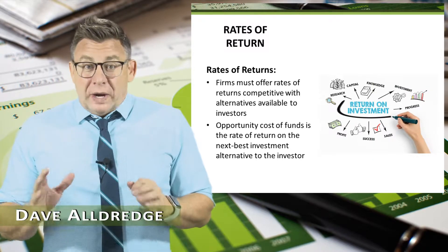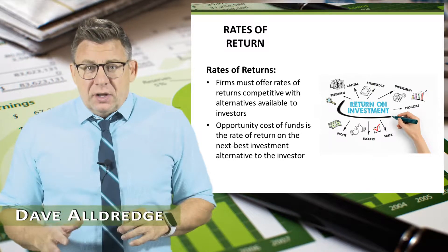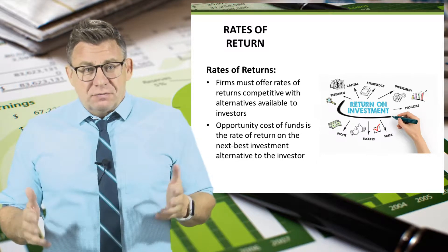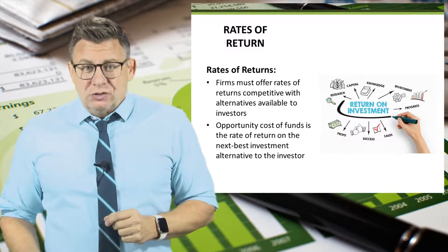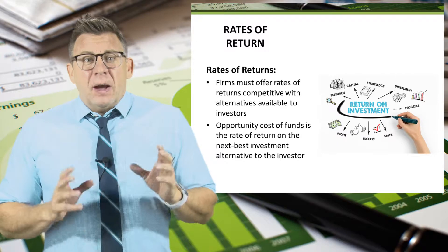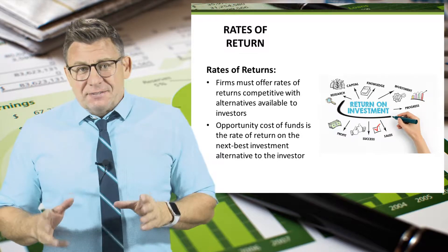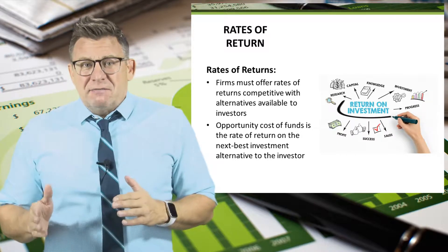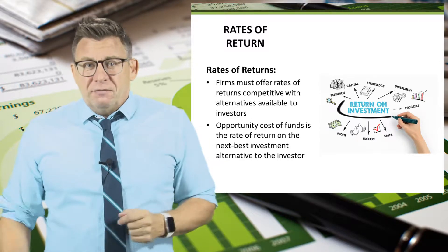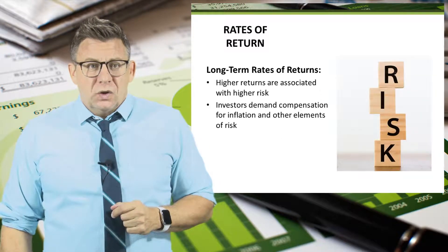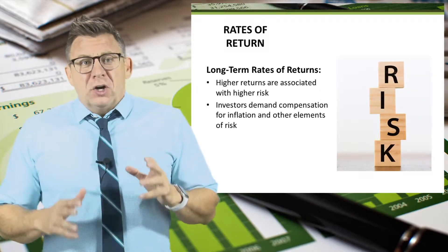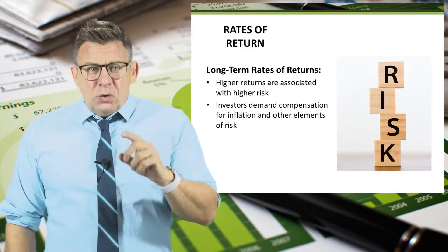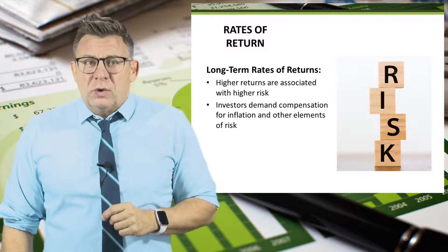Firms must offer rates of return competitive with alternatives available to investors. Otherwise, investors will choose the alternatives. The opportunity cost of funds is the rate of return on the next best investment alternative to the investor. When firms offer higher returns to investors, they are doing so to compensate for higher risk.